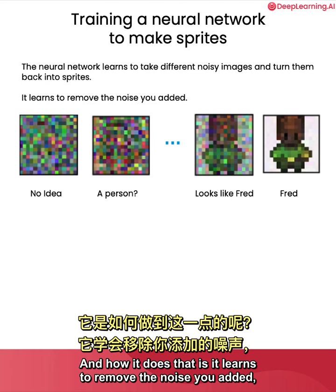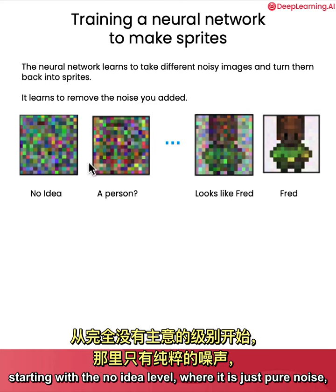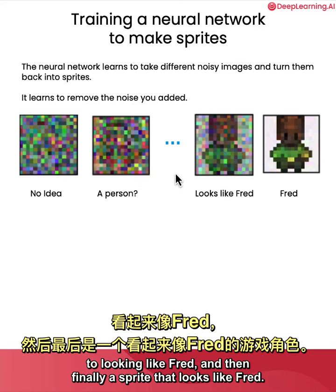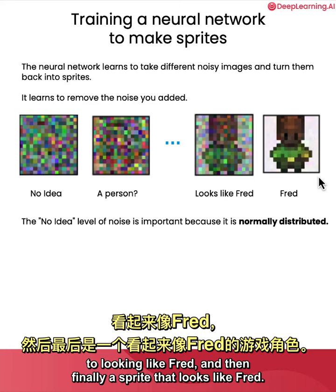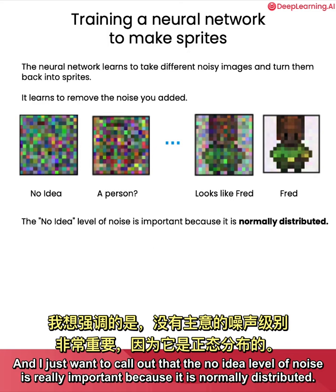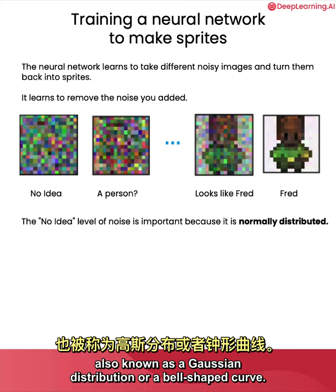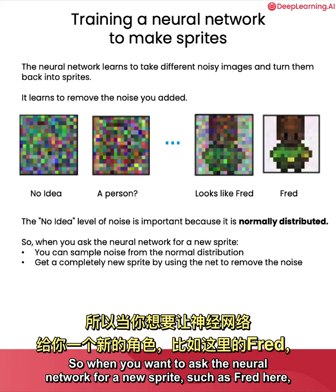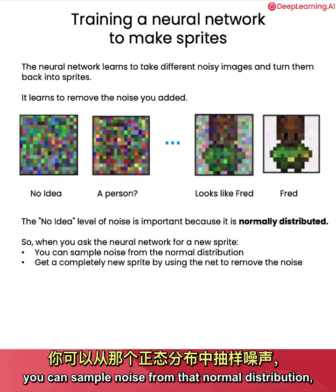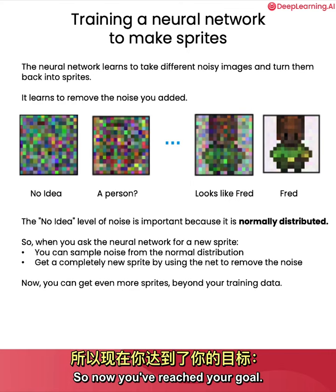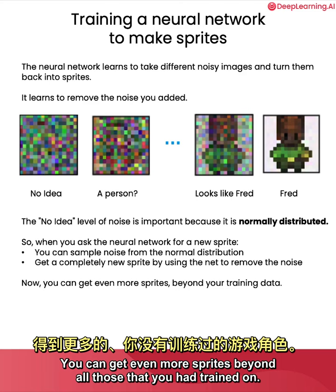How it does that is it learns to remove the noise you added, starting with the no idea level where it is just pure noise, to starting to give a semblance of maybe there's a person in there, to looking like Fred, and then finally a sprite that looks like Fred. The no idea level of noise is really important because it is normally distributed — each of those pixels is sampled from a normal distribution, also known as a Gaussian distribution or a bell-shaped curve. So when you want to ask the neural network for a new sprite, such as Fred, you can sample noise from that normal distribution, and then get a completely new sprite by using the neural network to remove that noise progressively. So now you've reached your goal — you can get even more sprites beyond all those that you had trained on.